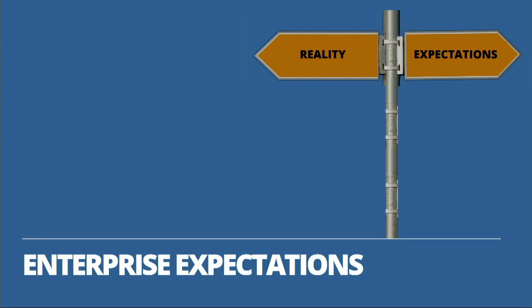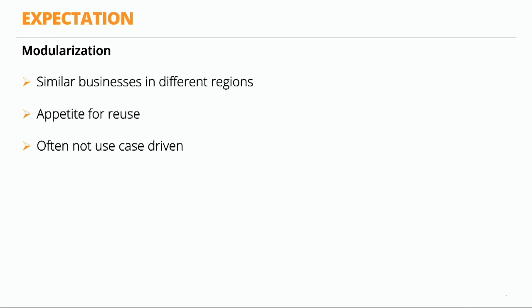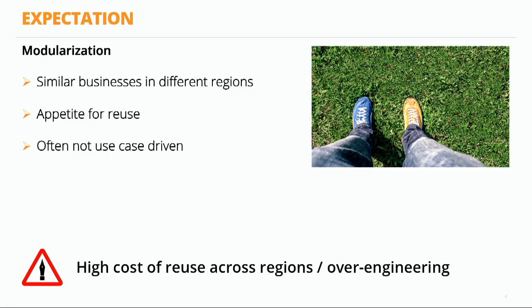Let me start with enterprise expectations — things that need to be managed well, otherwise reality ends up in the opposite direction. The first is modularization. Enterprises, by the nature of their size and geographical distribution, often run similar businesses in different regions. There is always a high appetite for reuse — they want the same look and feel in other regions. Sometimes these things are not use-case driven, and you can end up with very high cost when it comes to reuse of your code across regions.